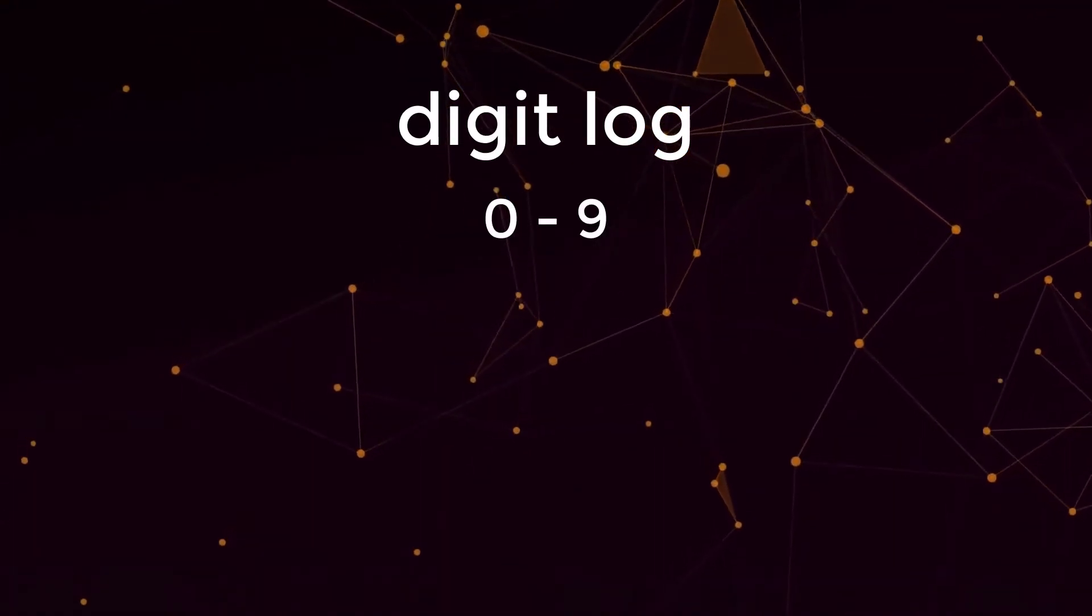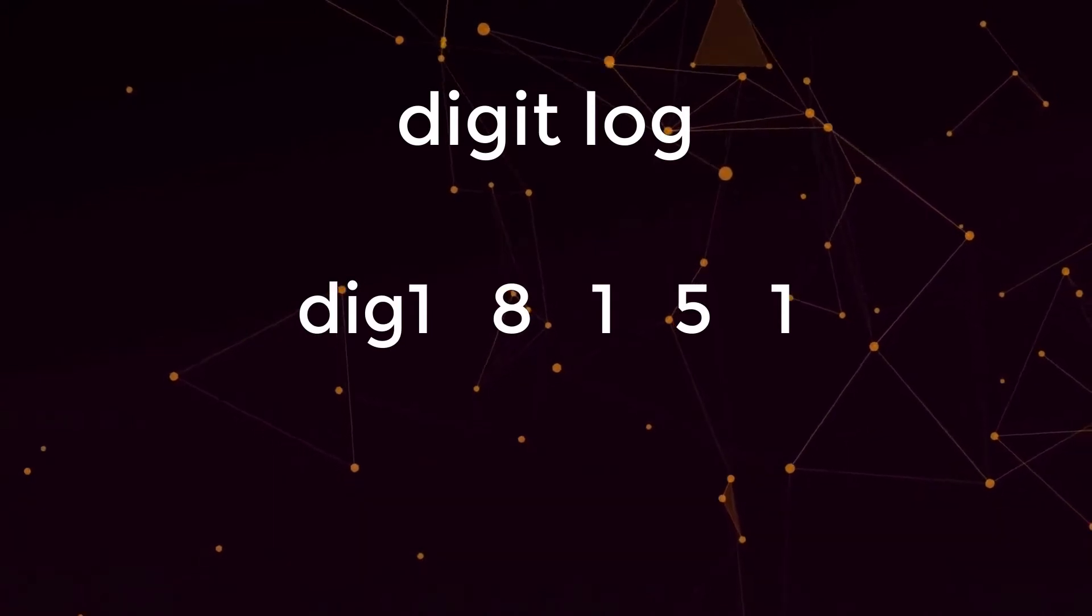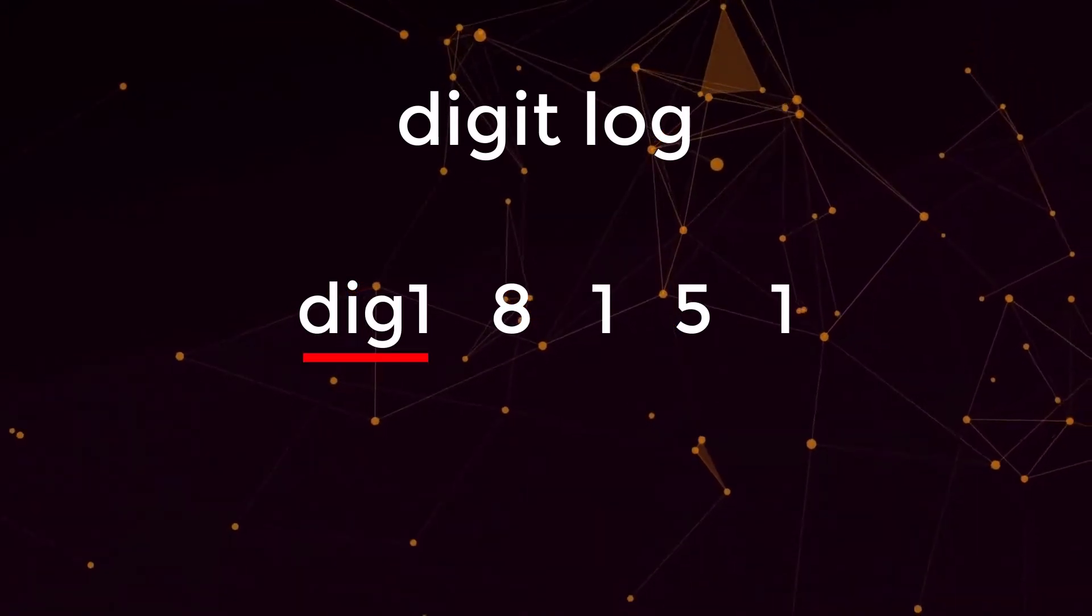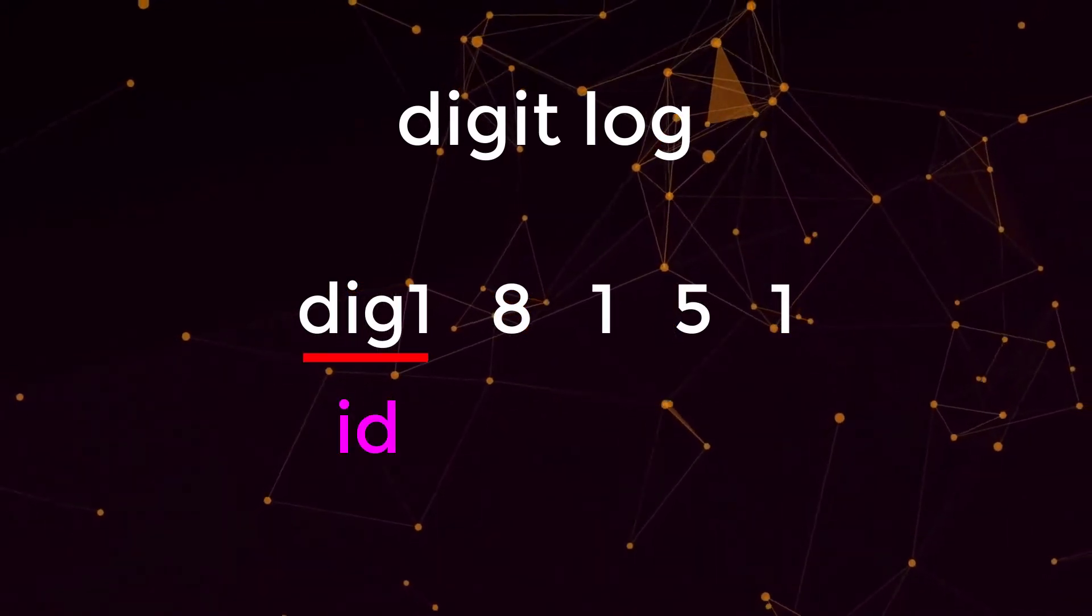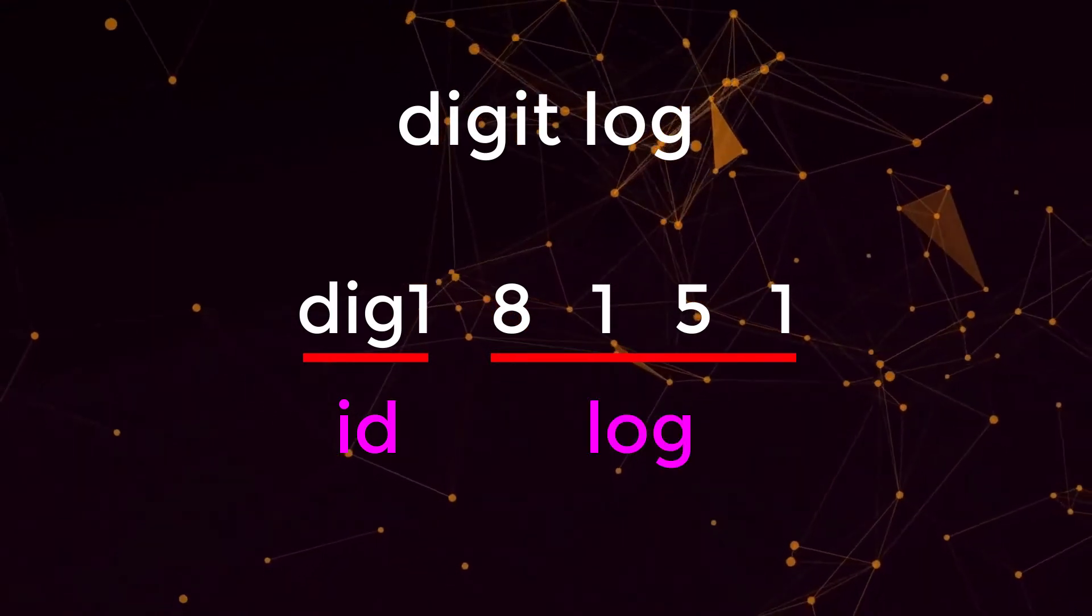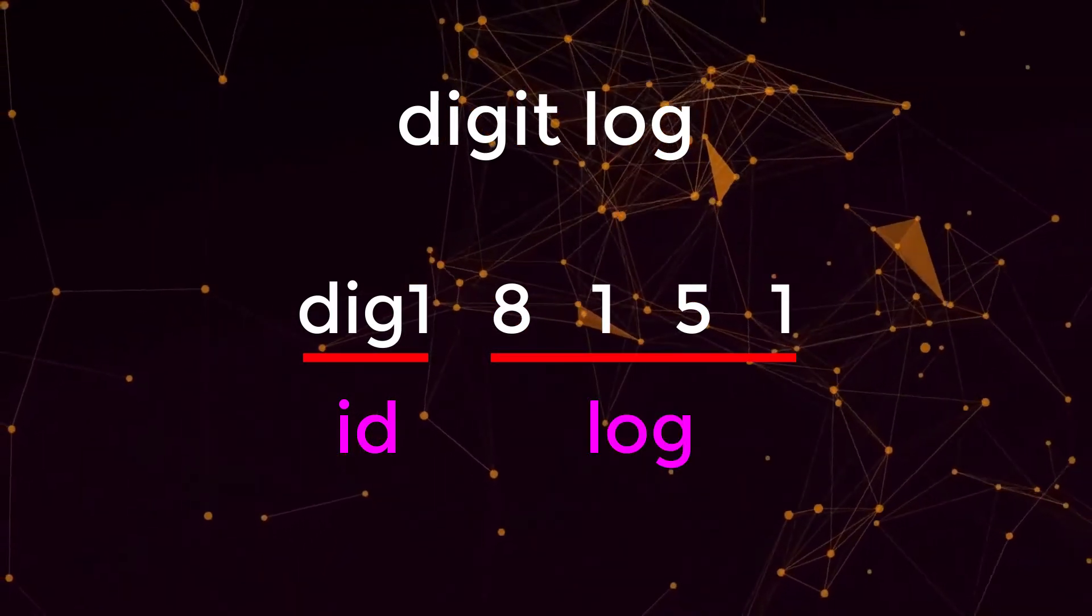As for a digit log, it consists of only digits. And just like before, the first part is a unique identifier and then everything after the identifier is the actual log portion where it only consists of digits.